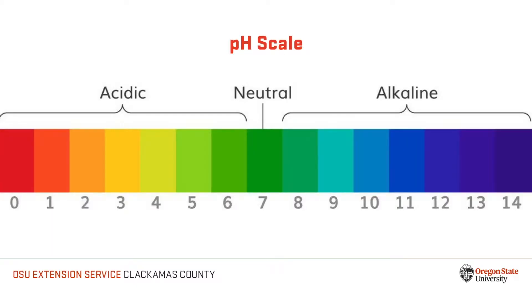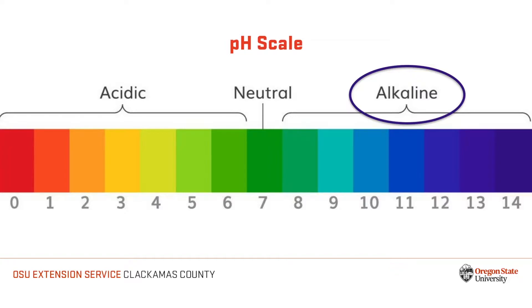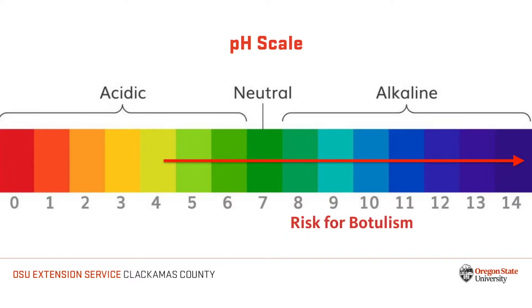pH measures the acidity level in a food solution using a scale between 1 and 14. A pH value of 1 is most acidic, a pH value of 7 is neutral, and values above 7 are considered basic. It's important to test the pH because values above 4.6 are associated with the risk for botulism.